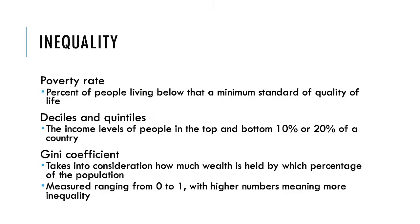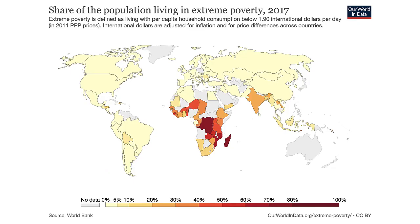The last set of measures used to evaluate countries' economies are measures of inequality — how evenly income is distributed between the rich and the poor in a country. Inequality can be thought of in three ways. First, the poverty rate. A country's poverty line is the level of income needed to maintain a basic standard of living in that country. The poverty rate is the percent of people living below that line.